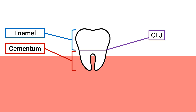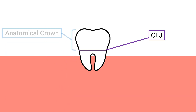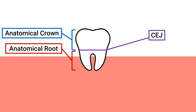The junction point at which the enamel meets cementum is called the cemento-enamel junction, or CEJ for short. Anything that is incisal or occlusal to the CEJ line and is made up of enamel is the anatomical crown. Anything that is apical or towards the root to the CEJ line and is made up of cementum is the anatomical root.